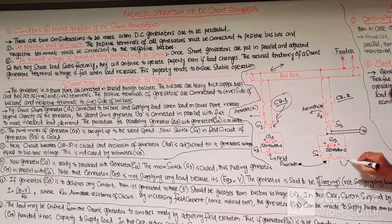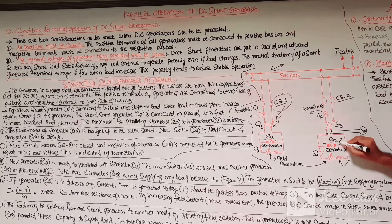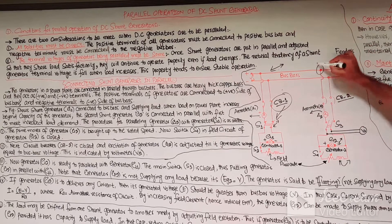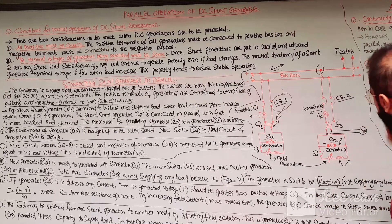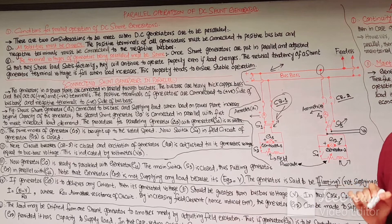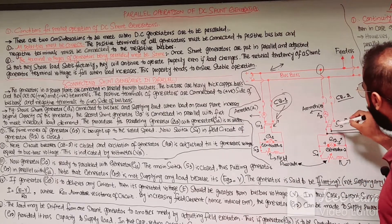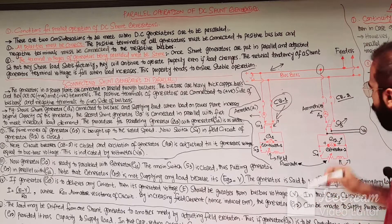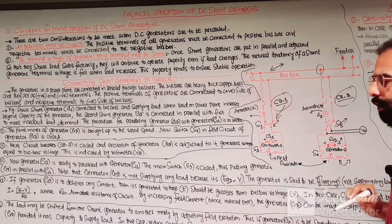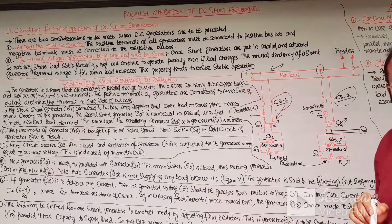There is also circuit breaker number 1 for G1. The G2 generator is going to be connected in parallel with the bus bar or with G1 to meet increased load demand when the G1 generator load exceeds its capacity. This is the field circuit of generator number 2 with switch S4, the G2 generator itself, ammeter to measure delivered current, main switch S3, and circuit breaker number 2 connected with the bus bar for protection.